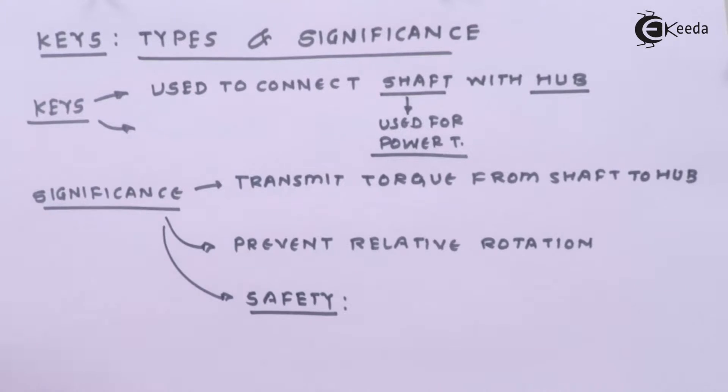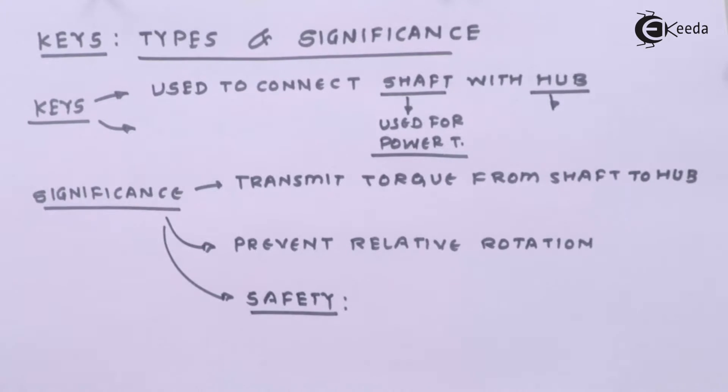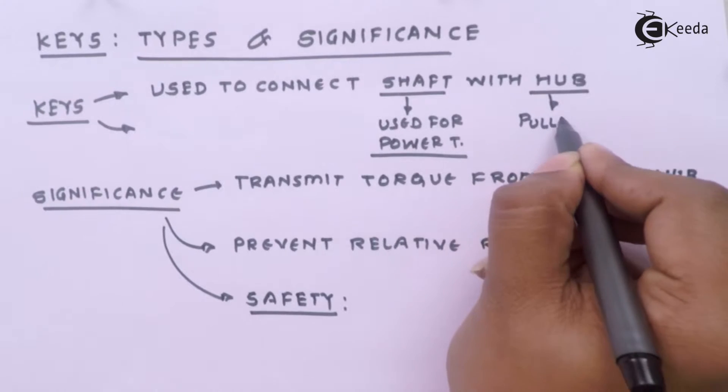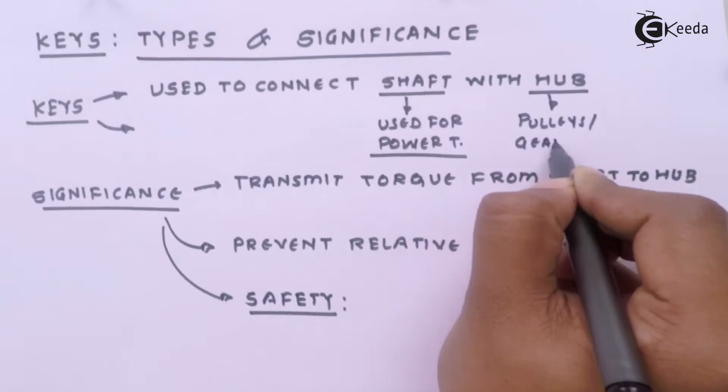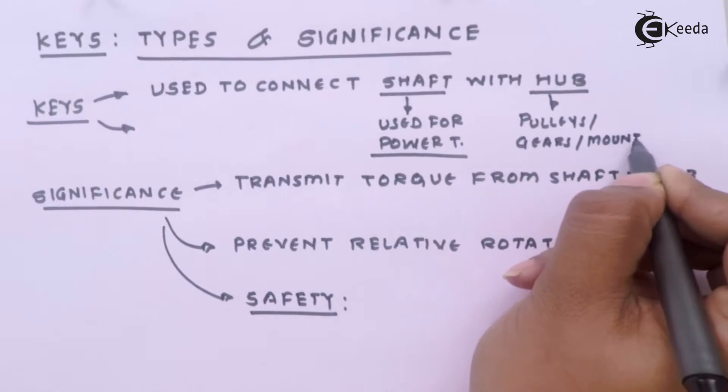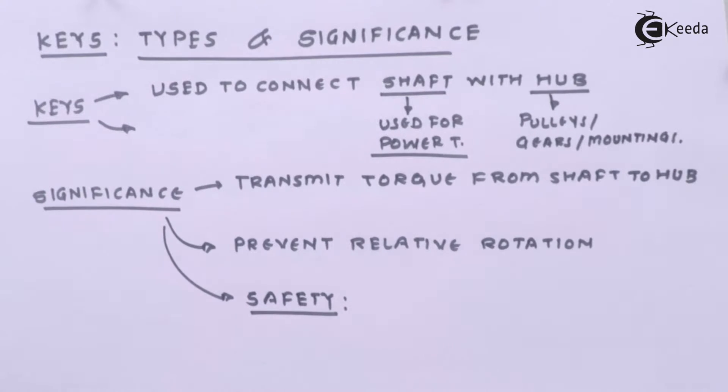Shaft will transmit the power ahead and the hub is a member or structure which is made inside pulleys or gears or any other mountings. Basically these are the two parts which are connected by means of keys.